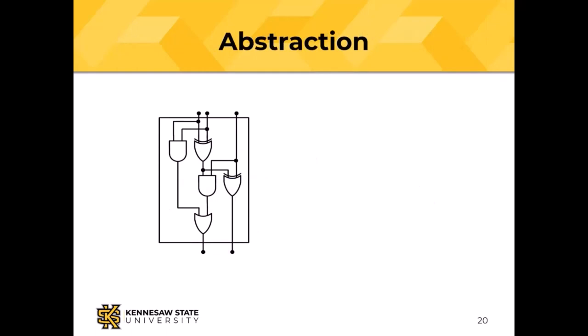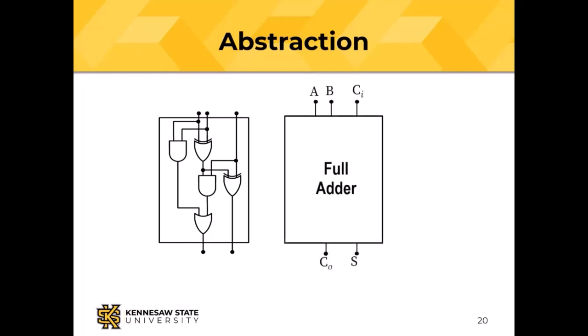We can turn the full adder diagram on its side, draw a box around it, and label it 'full adder.' Everything inside is abstracted away. We've built it up and now we don't need to worry about the internals anymore. The box has three inputs — A, B, and C_i — and two outputs — C_o and S.